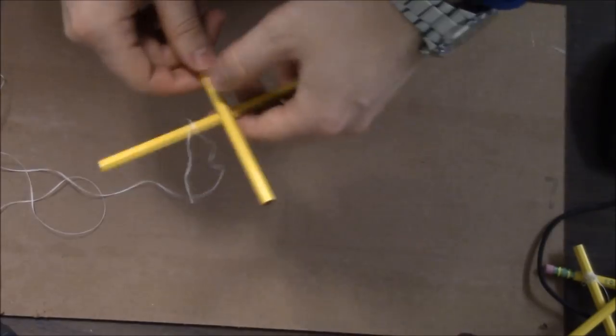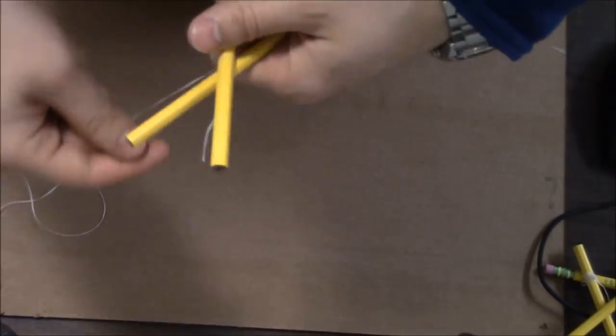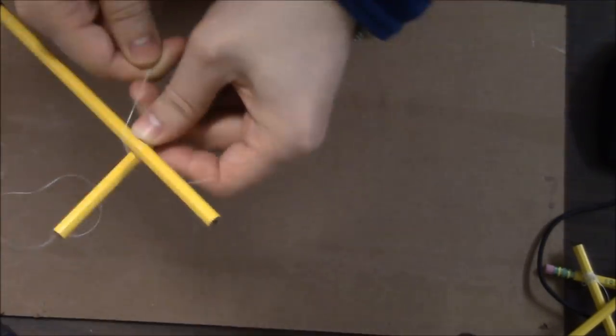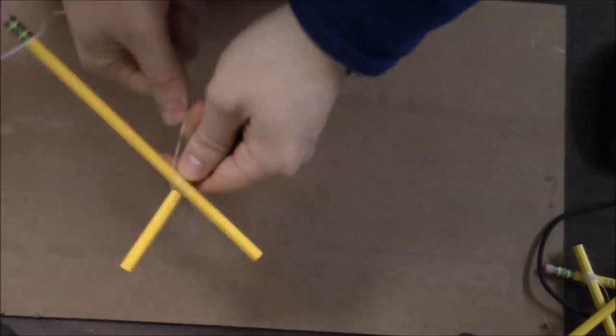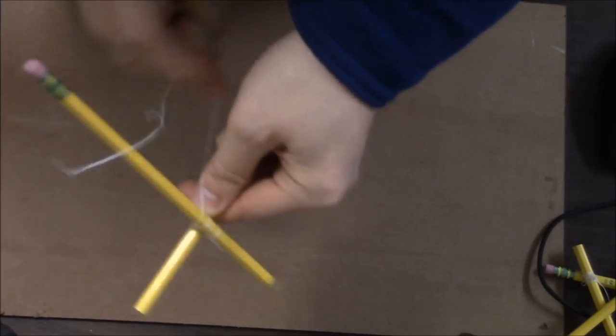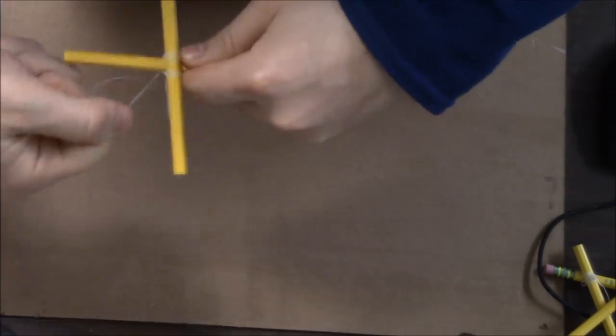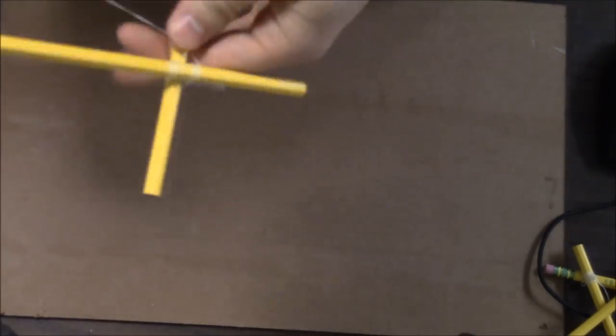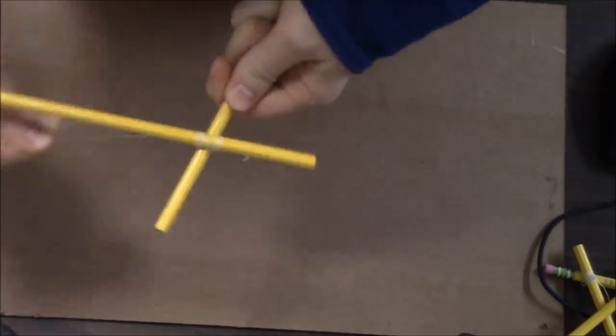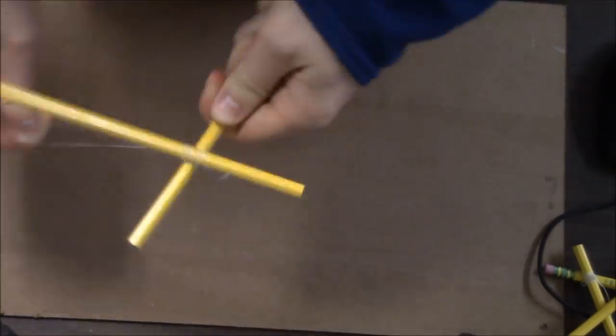We will use square lashings to connect the A-frames. Start as you would with diagonal lashings, but wrap the pencils together in a square pattern. This makes it easier for them to stay at right angles. Wrap and tie off as you would with diagonal lashings.